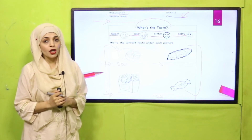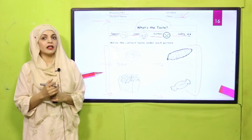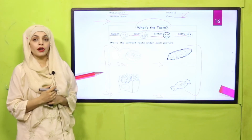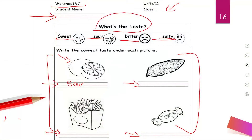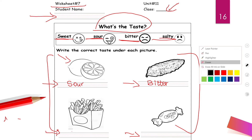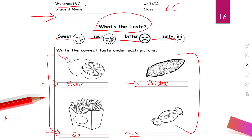Let's recheck the worksheet. The next picture is of a bitter gourd — it has a bitter taste. The next is fries — fries have a salty taste. Then a candy — it has a sweet taste. I hope you have done it correctly.